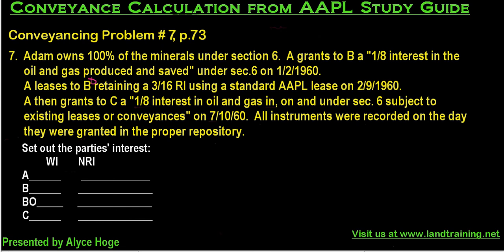Let's look at the conveyance problem number seven on page 73. Adam owns a 100% mineral interest — I'm going to assume from this point on, if they don't tell me otherwise, that Adam owns 100% of the minerals.